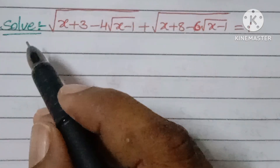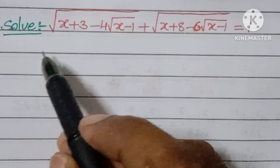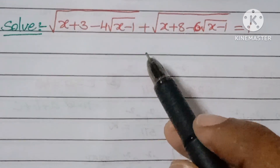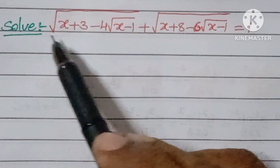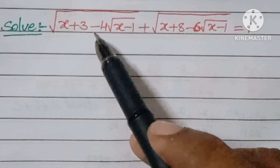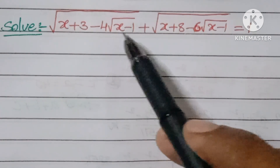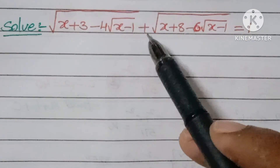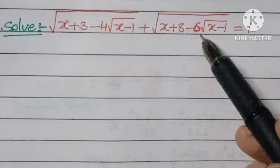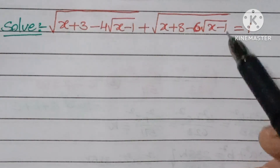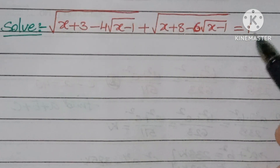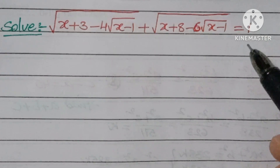Hello, welcome back to Ian's CG Max. Today we are looking at a volume pad problem. The question is: given the square root of (x + 3) minus 4 times the square root of (x - 1), plus the square root of (x + 8) minus 6 times the square root of (x - 1), equals 1 — you have to find the values of x.